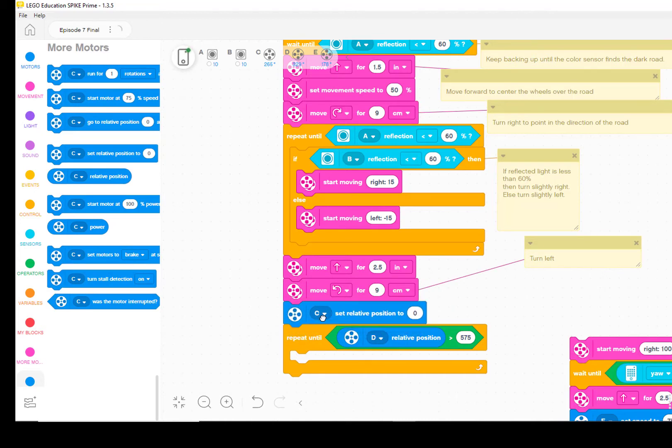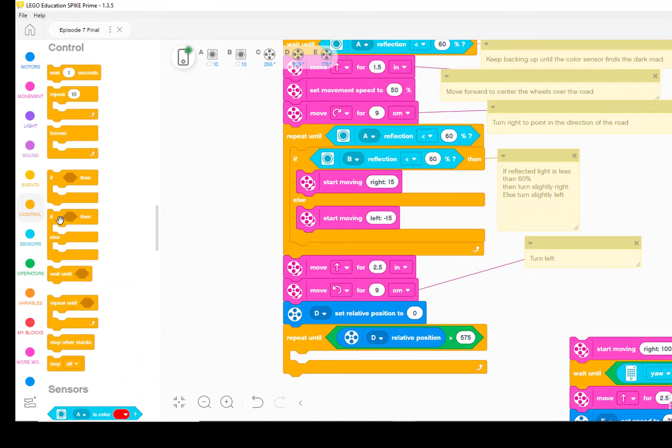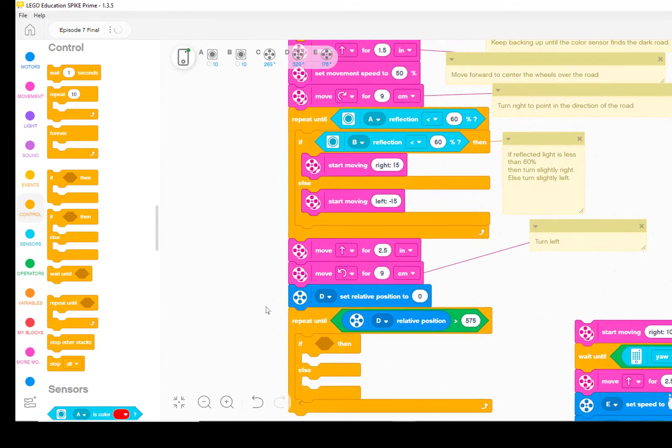Now we need to add an if-then-else block to the repeat until so we can do different things based on what the color sensor sees. The if condition should be the same as we used in the last episode. Whether the color sensor sees less than 60% reflected light.